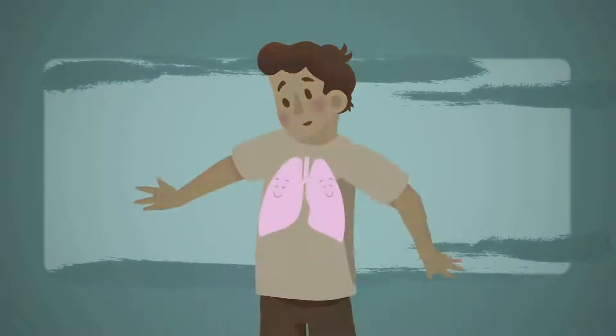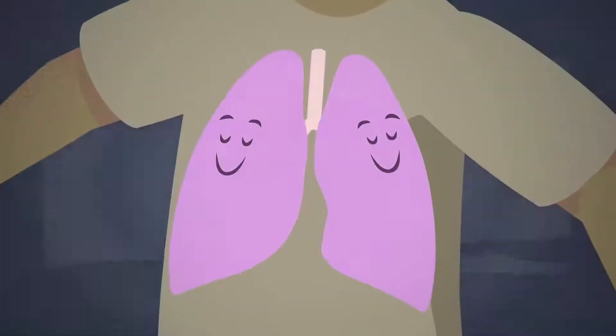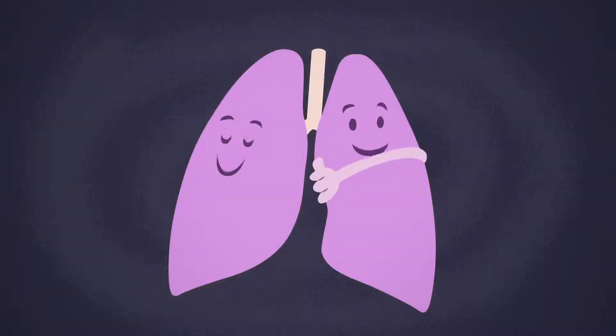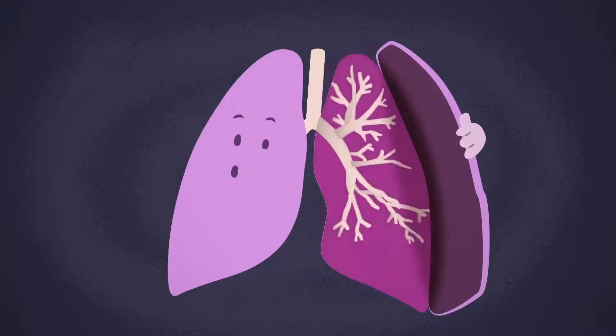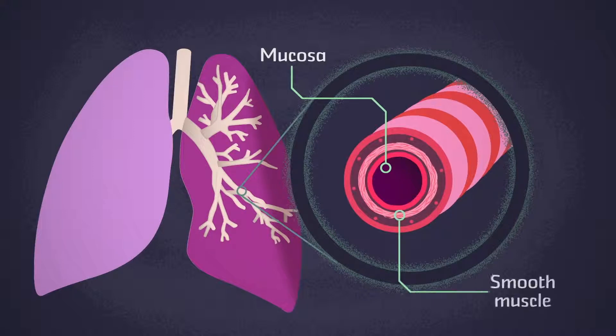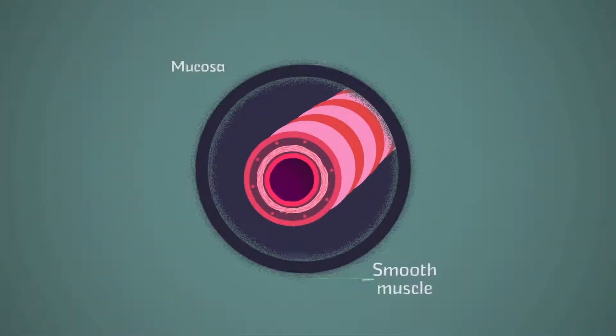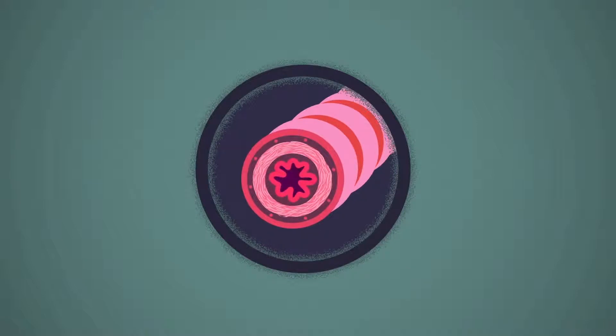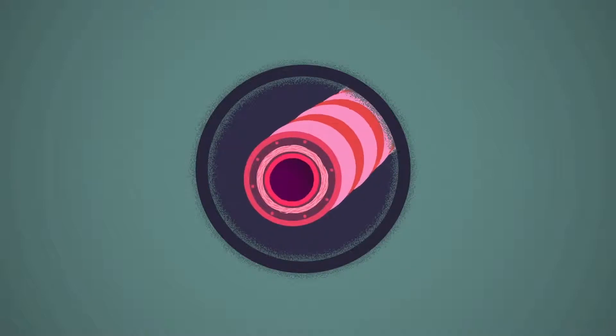Asthma affects the respiratory system, particularly the smaller airways, such as the bronchi and bronchioles. These airways have an inner lining called the mucosa that's surrounded by a layer of smooth muscle. In people with asthma, the airways are chronically inflamed, which can make them hyper-responsive to certain triggers.